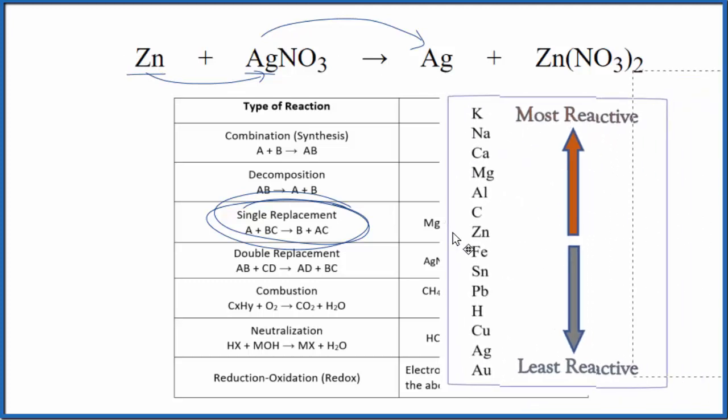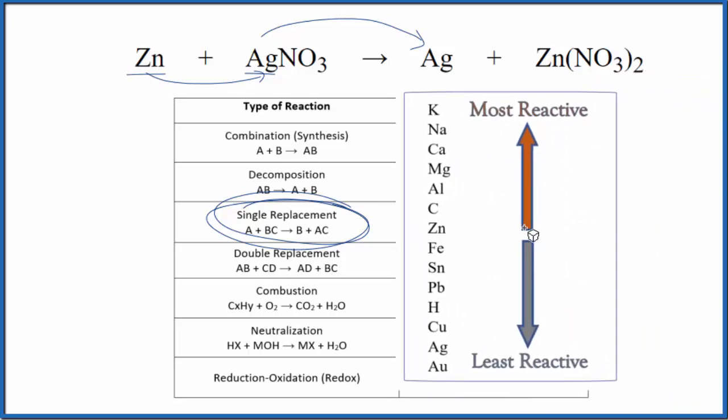So if we look at the activity series here, we'll find zinc, which is right here, and then silver is way down the bottom. So silver is really not very reactive here. Zinc is going to be a lot more reactive. So zinc will be able to push the silver out and get the nitrate here. So this is a single replacement and it does happen.